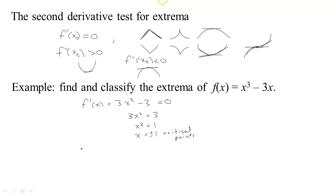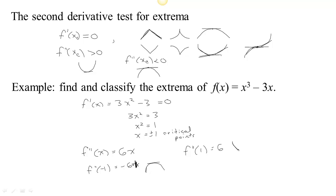Since this function also has a second derivative, if we take it we get 6x. At the critical point x = −1, the second derivative gives −6. Since that's negative, we know the first derivative is decreasing, so we must be at the top of a bowl — there is a max at x = −1. On the other hand, at x = 1, the second derivative gives 6 times 1, which is 6. That means the first derivative must be increasing, so we're at the bottom of a bowl. We have a max at x = −1 and a min at x = 1.